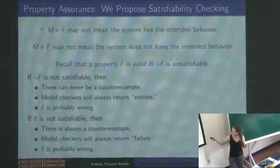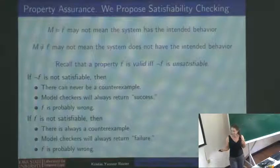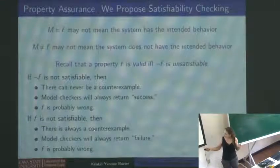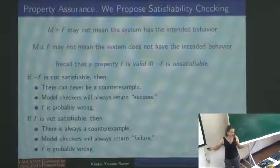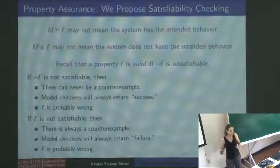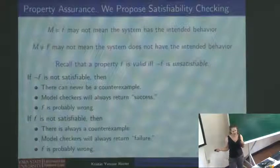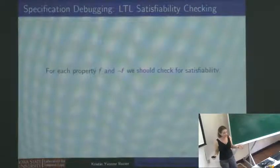The reverse is also true. If your model checker says your system does not satisfy your temporal logic formula, this could be because F is not satisfiable in general — it has nothing to do with your model M. You could try to tweak M forever and never succeed. You'll always get a counterexample, always think your system is not deployable — but it's probably because your specification is wrong.